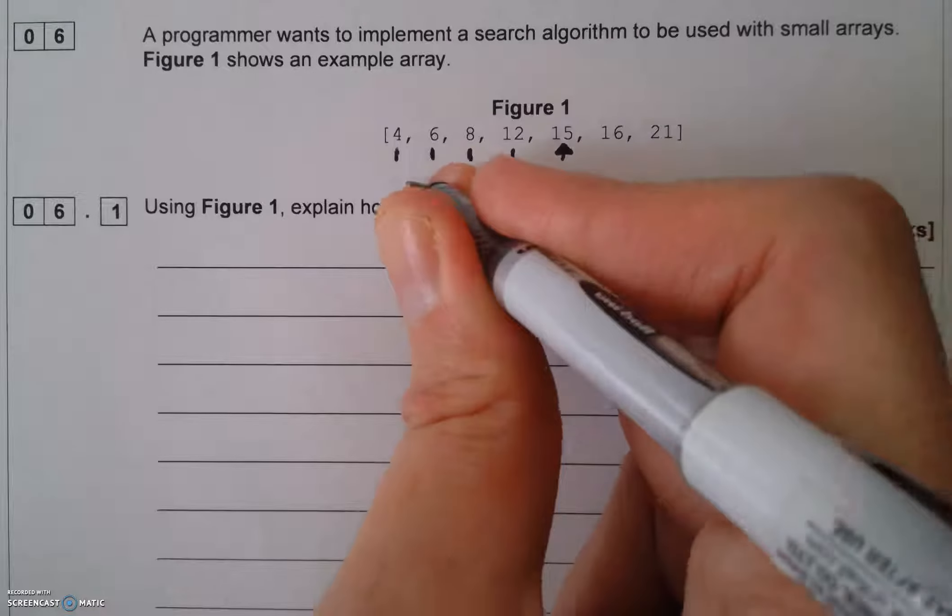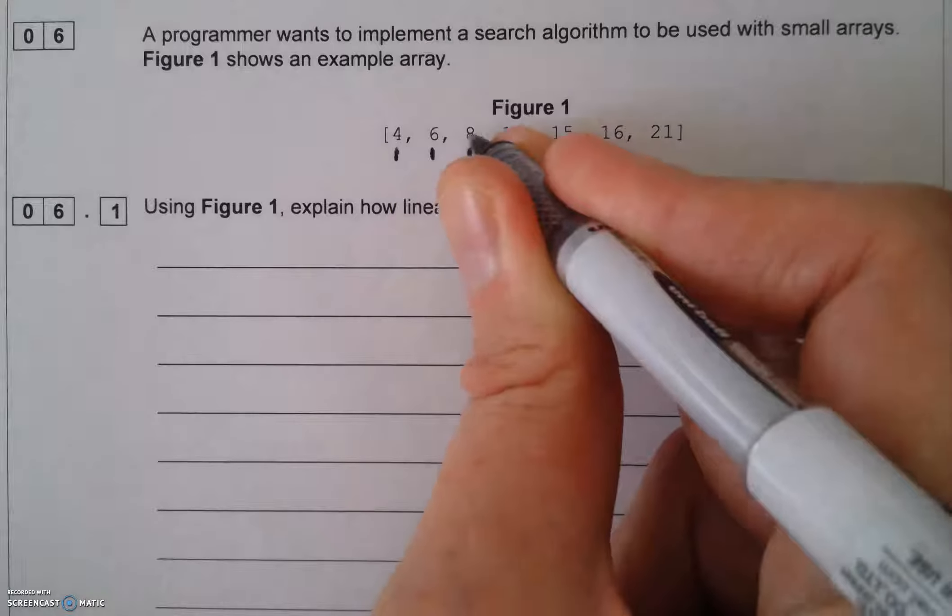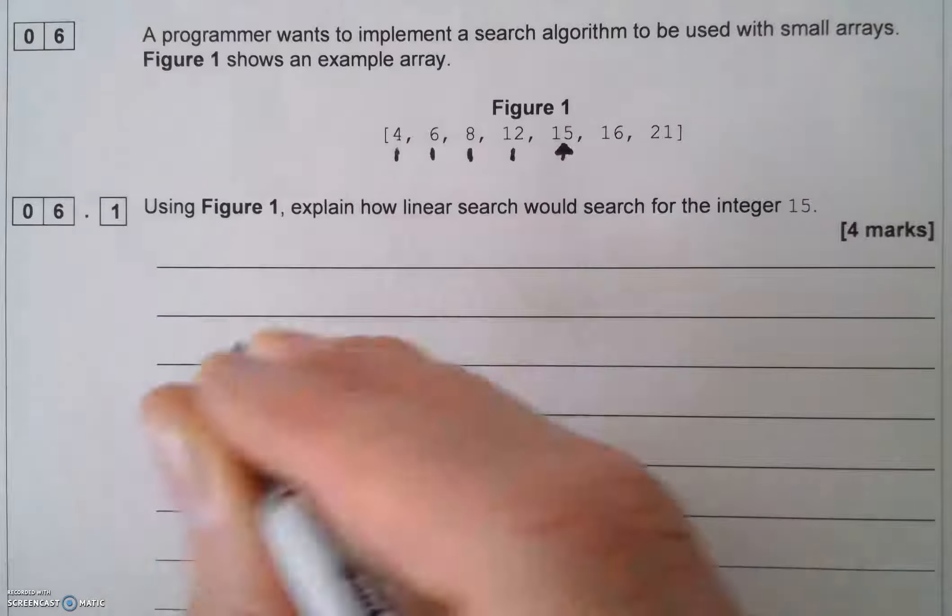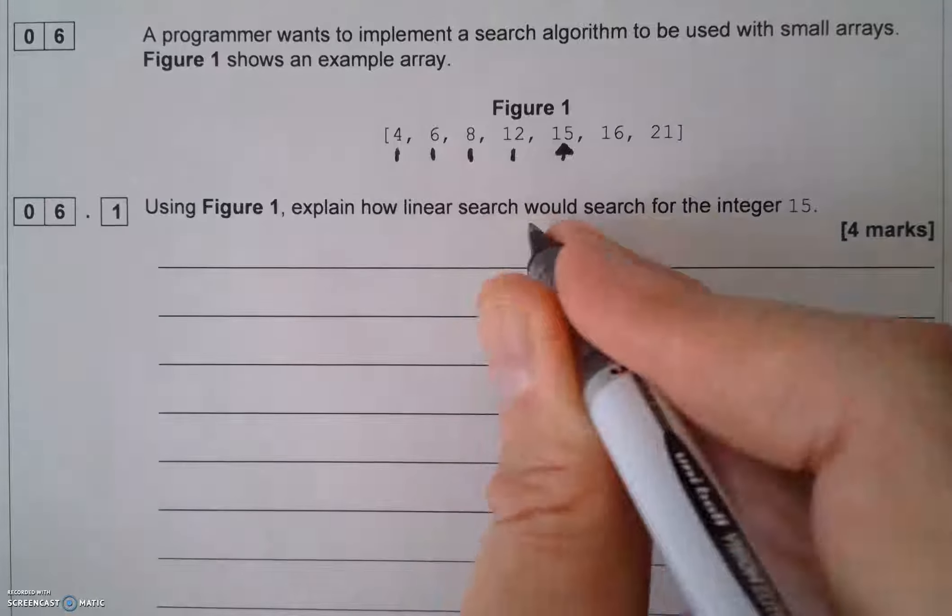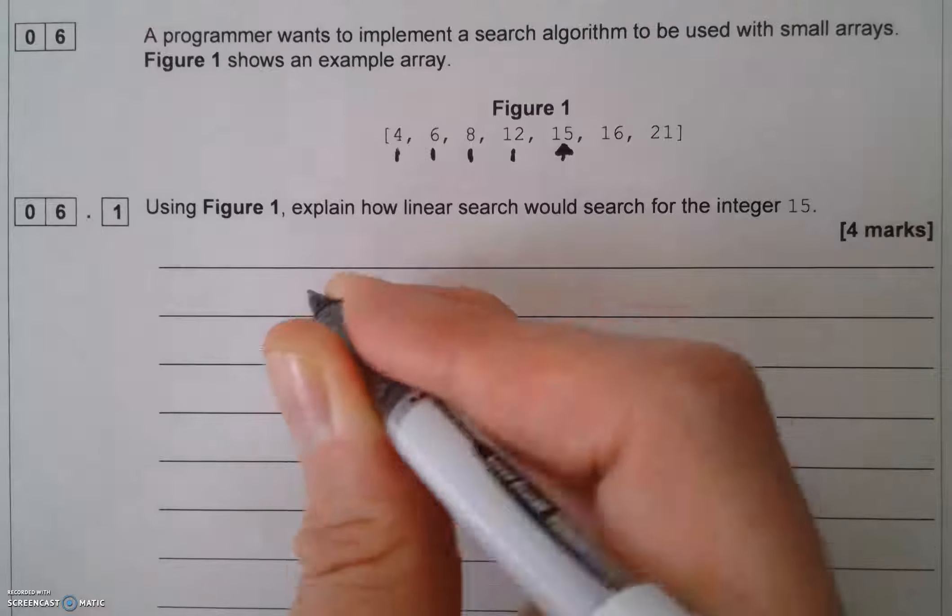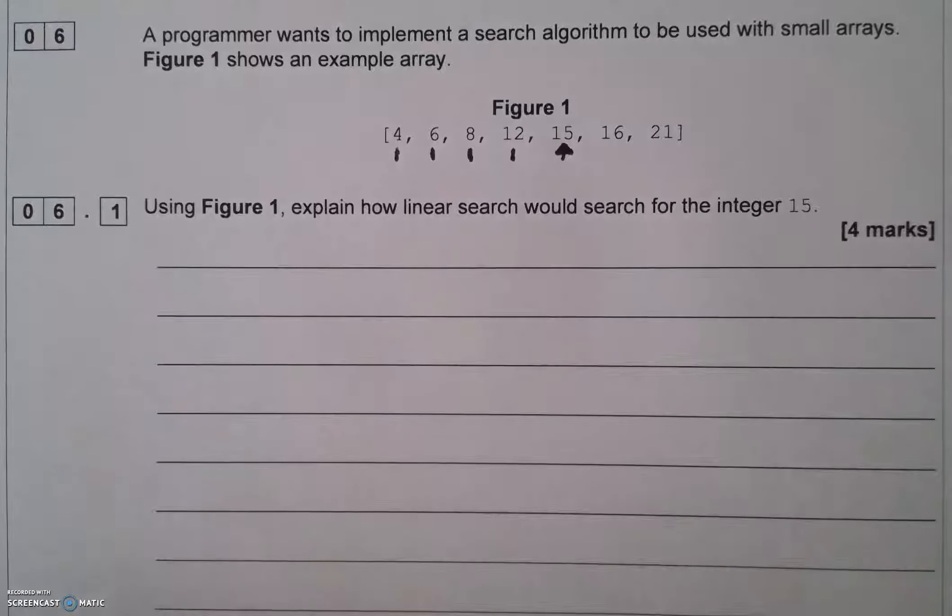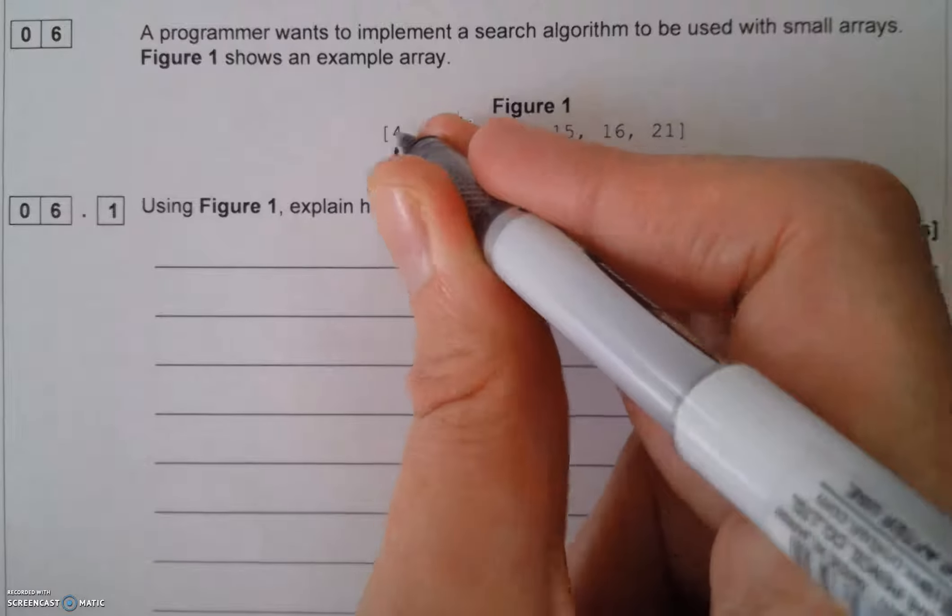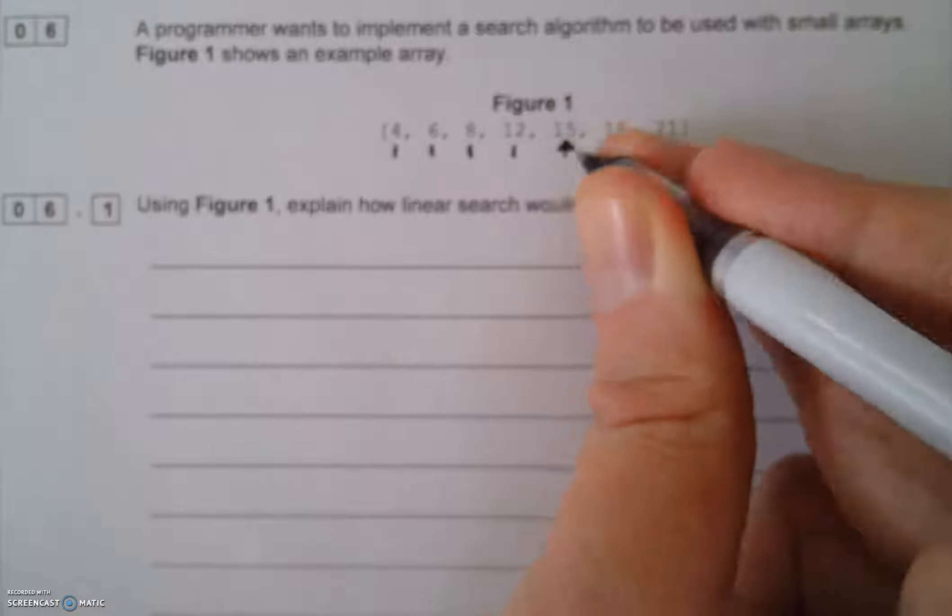What that means is the linear search looks at each one individually until it finds the element that it wants. The question asks me to explain that for four marks. That sounds quite easy to explain, but you need to make sure that you're using the correct terminology and the correct computer science language.